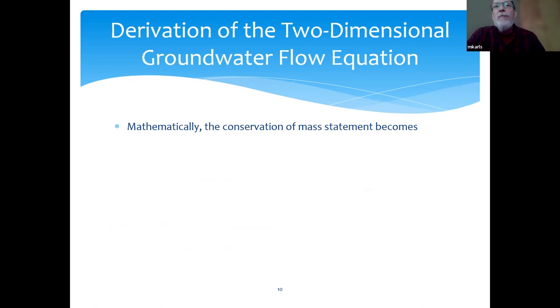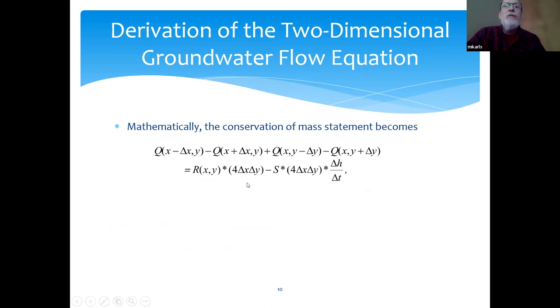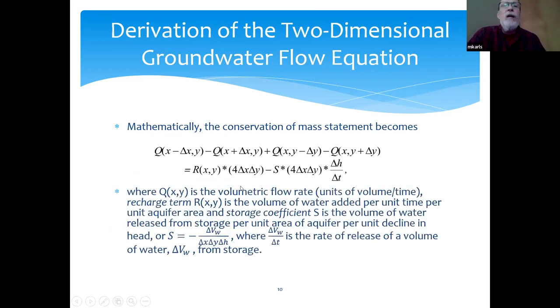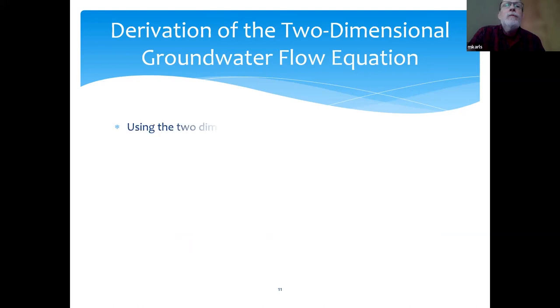Mathematically, the conservation of mass statement becomes this expression here. What I've done is I put the flow terms on the right side and then on the left I have the terms involving adding water or storage. Here Q of x,y is the volumetric flow rate in units of volume per time, R of x,y is a recharge term, the volume of water added per unit time per unit aquifer area, and the storage coefficient S is the volume of water released from storage per unit area of aquifer per unit decline in head. S is equal to delta V_W over delta x delta y delta h, where delta V over delta T is the rate of release of a volume of water from storage.